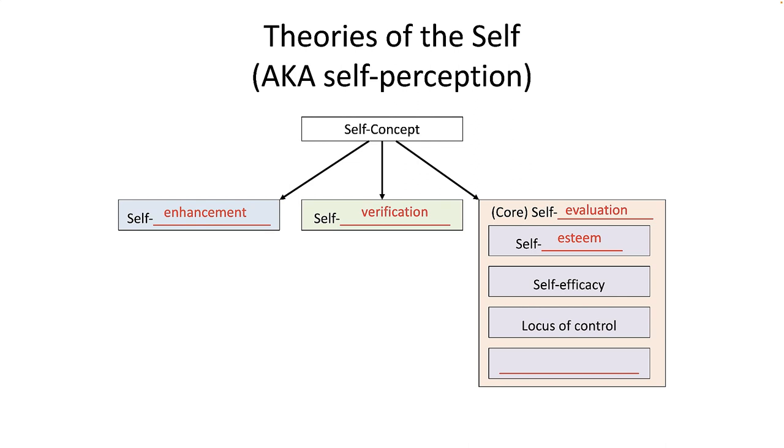This is essentially the sense that we can succeed if and when we apply sufficient effort. We say to ourselves, I can dig that ditch or master that algorithm or sell that product if I try really hard. The next part of core self-evaluation is locus of control. This is actually a personality trait that like other traits has a unidimensional spectrum. On one end of the spectrum, we have an internal locus of control. And on the other end, we have an external locus of control.